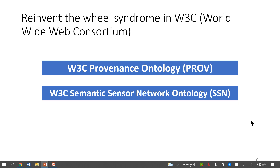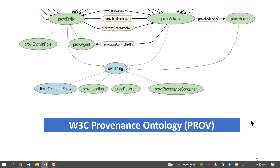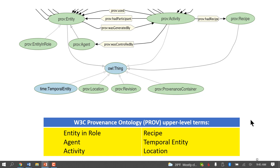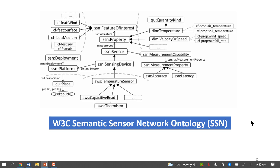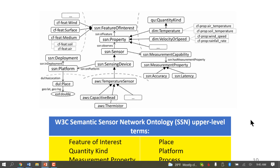This means that W3C ontologies have different top-level terms. The provenance ontology has its own top-level terms, and the semantic sensor network ontology has different top-level terms. This means that people using these two ontologies are in effect working in different worlds — there is no way their data can talk to each other without significant manual effort.